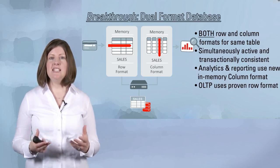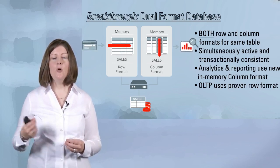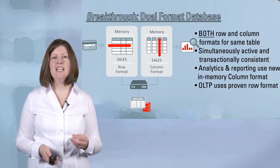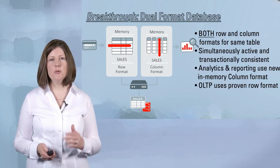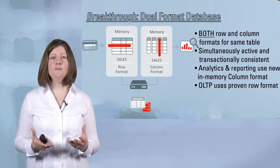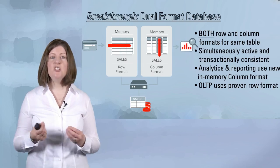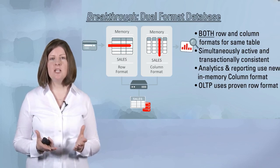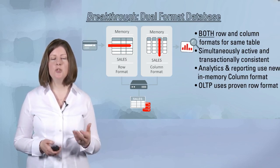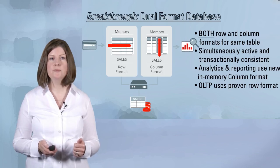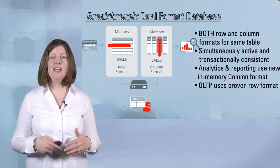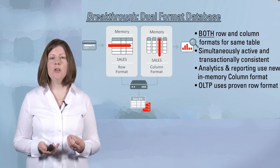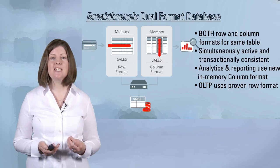It does not replace the existing row format in-memory that we've always had, or the buffer cache, and we'll explain how these two environments are co-located in the Oracle Database as we go through the presentation today. The column format is purely in-memory — it's not persisted on disk in any way, so nothing changes in terms of the disk capacity required to host your database. We'll talk through how you control which objects get populated into the column store and how you know whether or not your query is going to access the column store.